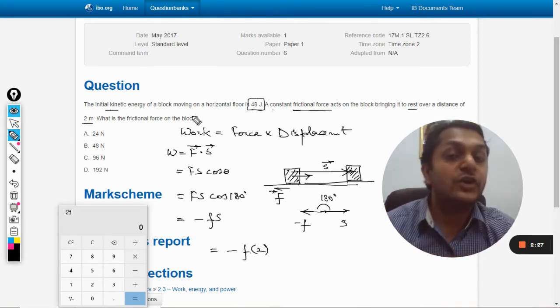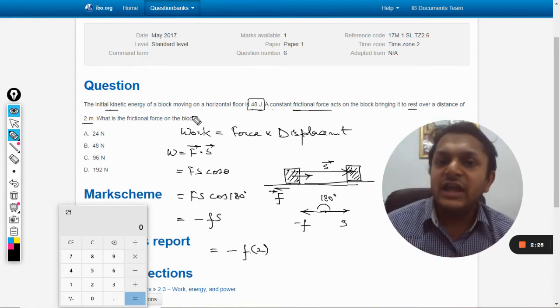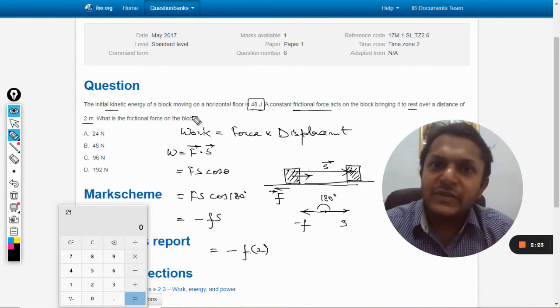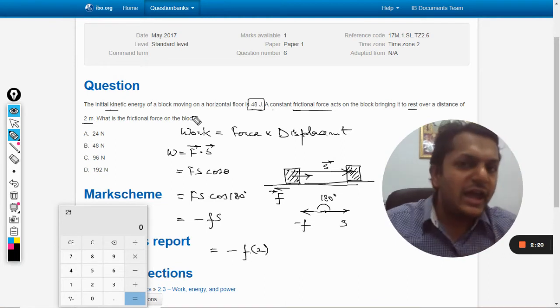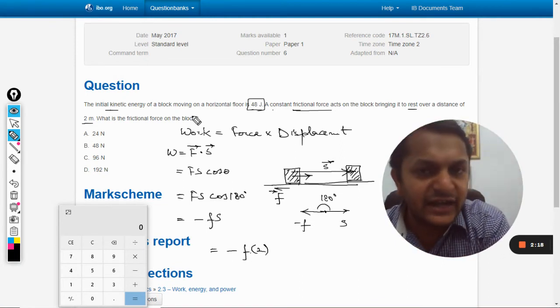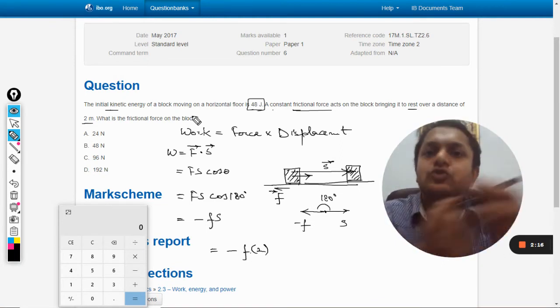...by friction has acted against the kinetic energy. So kinetic energy is used to do the work against friction. This will be equal to 48 joules. From here we find that the answer is 24 newtons.